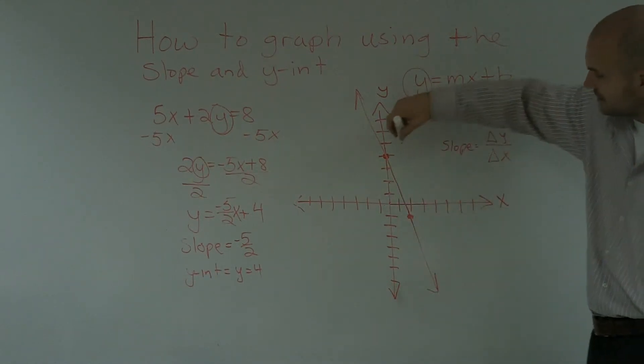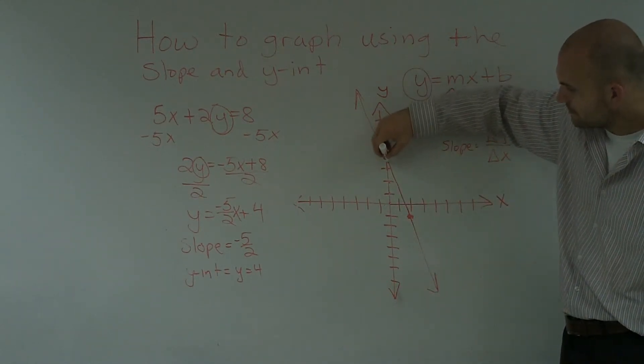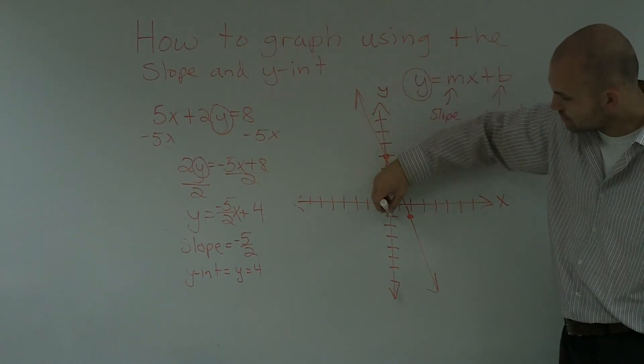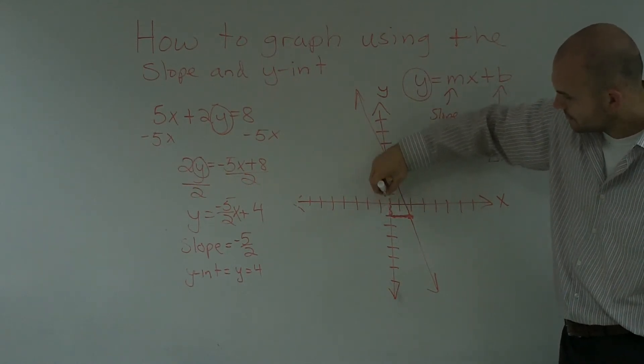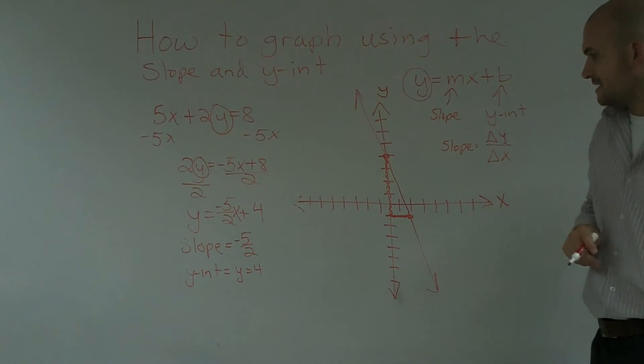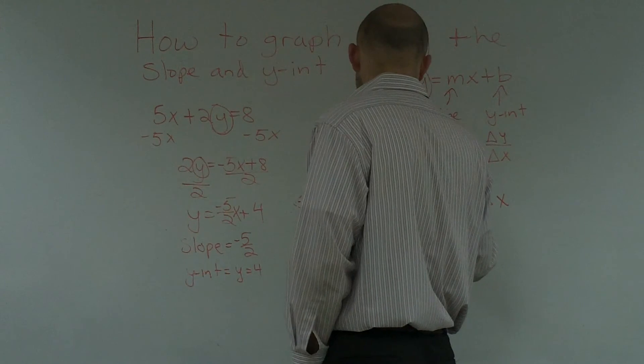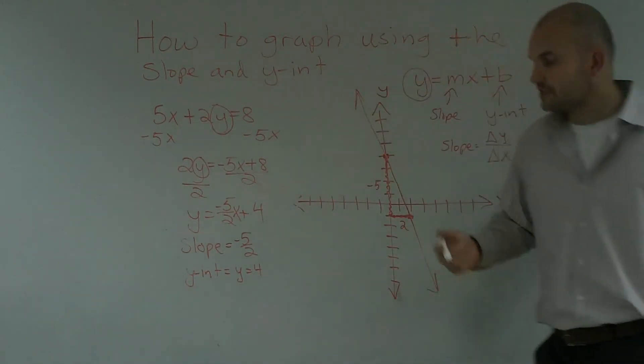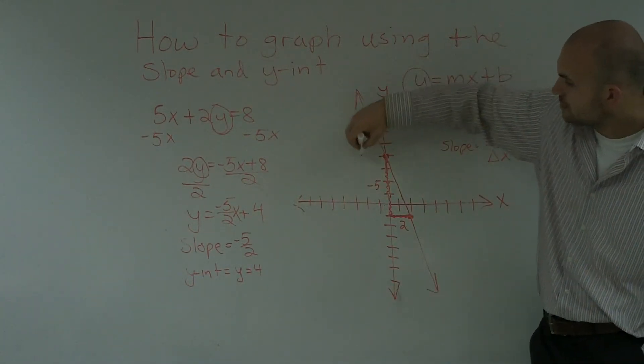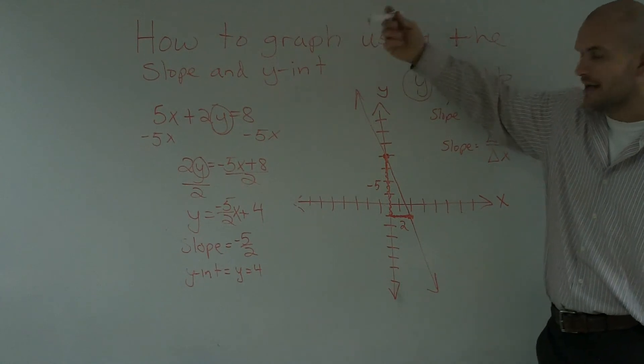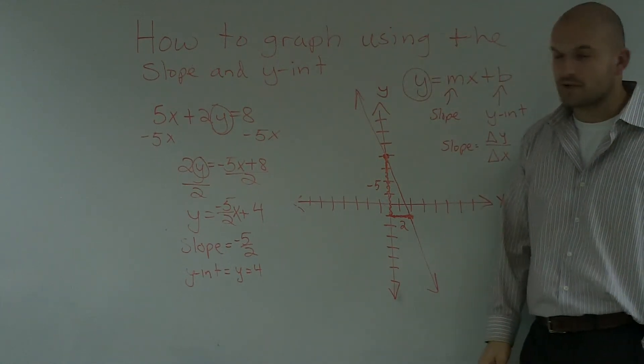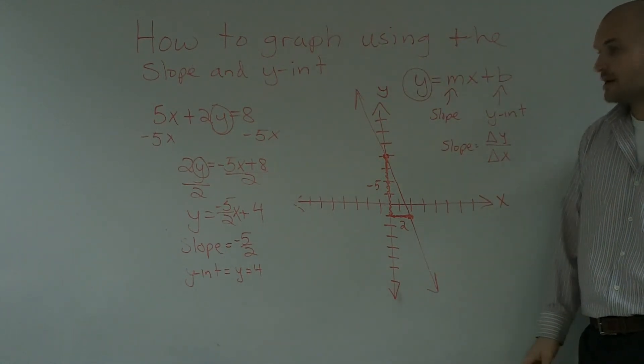Okay? So, all I did was I found my y intercept and then I used a slope triangle to go ahead and find my next point. So, this was negative 5 and this was over 2. Now, you could also have done the slope triangle the other way to go back upwards. I kind of ran out of space in my graph. But in another video, I'll show you guys how to do that.